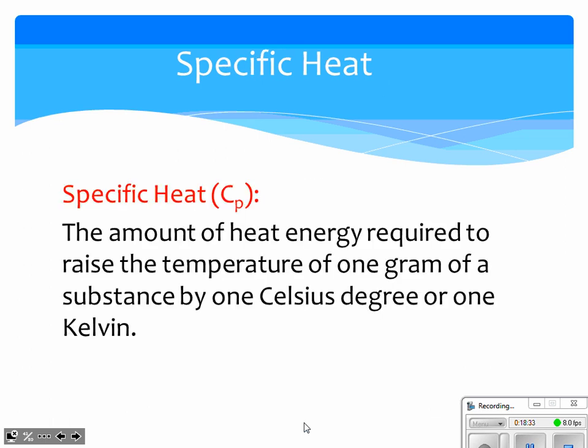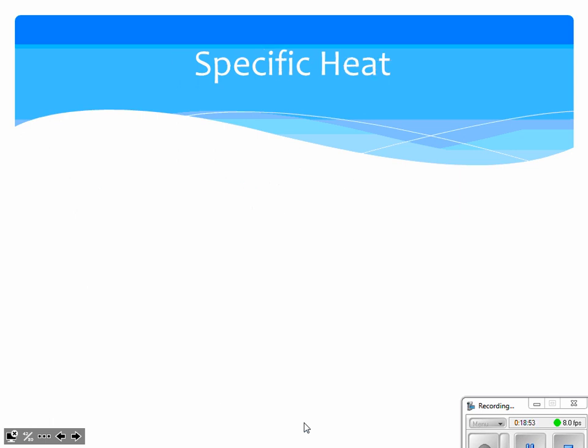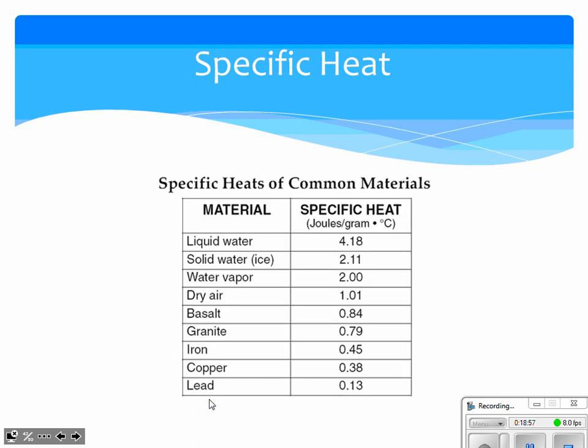Now, what does specific heat actually mean again? How much energy required to raise the temperature of one gram of a substance one degree Celsius. So by having a high specific heat, it's going to take a decent amount of energy compared to something that has a lower specific heat, such as lead or copper. That heat won't transfer into the water quite so quick because of the specific heat. It needs more energy to heat up that water than it will to heat up these metals.